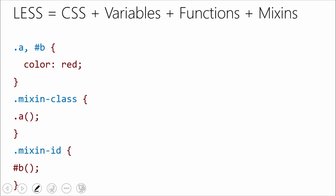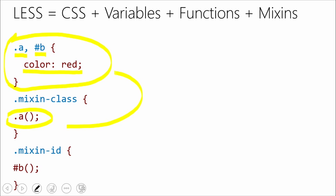The idea with mixins is you can define a style — here we've defined a class A and ID B, both with color set to red — and then create a new class that calls A as a mixin, bringing in that style. Whenever you use dot-mixing-class it goes up and gets color red. Here's a little secret: you don't need the parentheses to call mixins if there are no parameters being passed in.